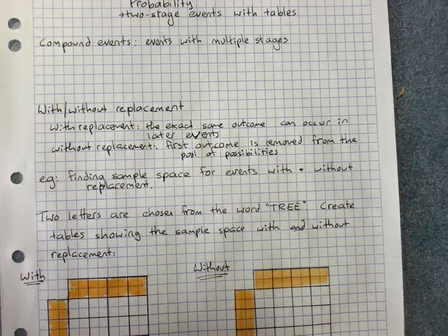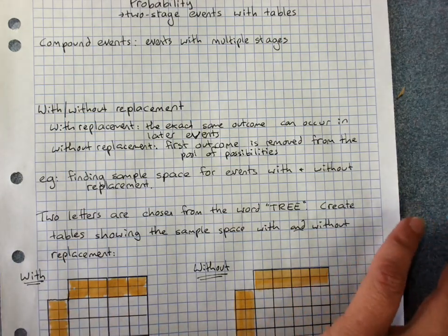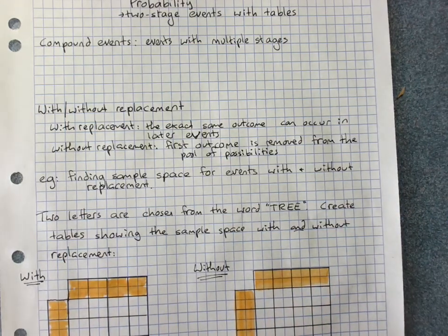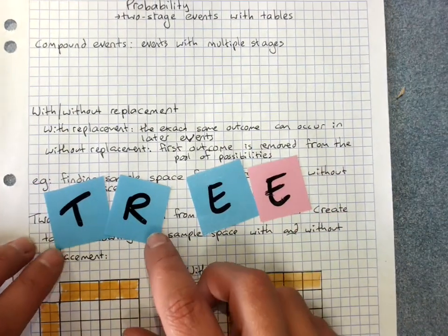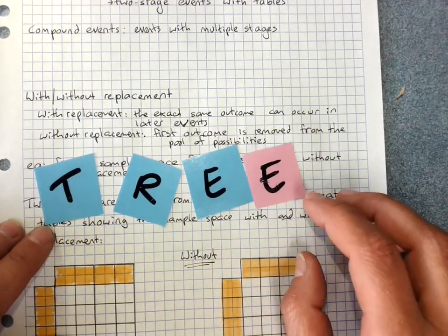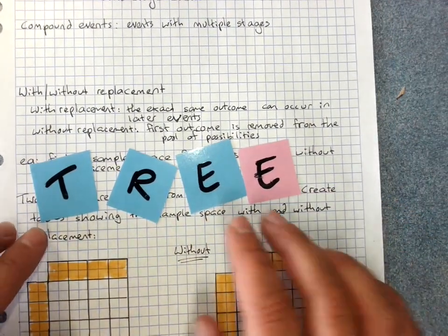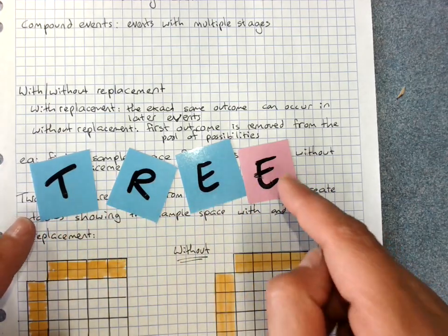It is important that we know whether our events are happening with or without replacement. The other reason I chose the word tree is that it has two E's in it, and that's why I've made one E pink. There are two different ways of choosing an E. There are not three different outcomes, there's four: T, R, this E, or that E.